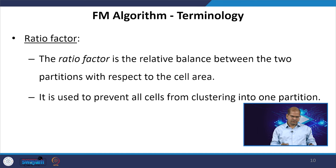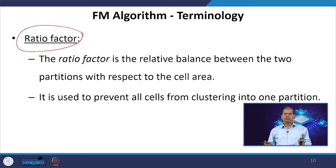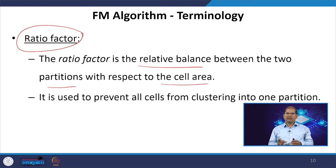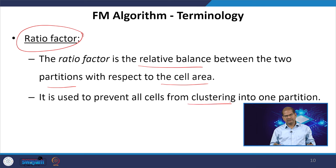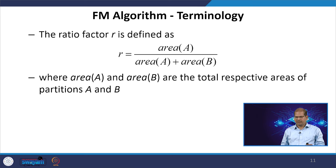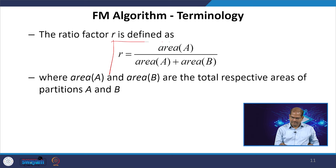Another key term is the ratio factor R, used for balancing the two partitions. It represents the relative balance between the two partitions with respect to cell area. Knowing all cell areas and the ratio factor, we can find bounds on what each partition is allowed to contain. This prevents all cells from clustering into one partition. The ratio factor R is defined as: R = Area(A) / (Area(A) + Area(B)).